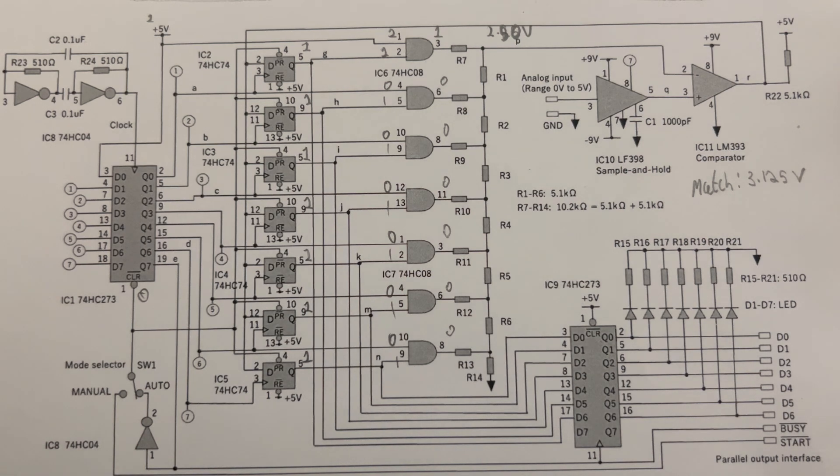Now since 2.5 is less than 3.125, this feedback becomes high, allowing pin 1 on the LM393 to be given a high, thus making the first D flip-flop stay at 1.